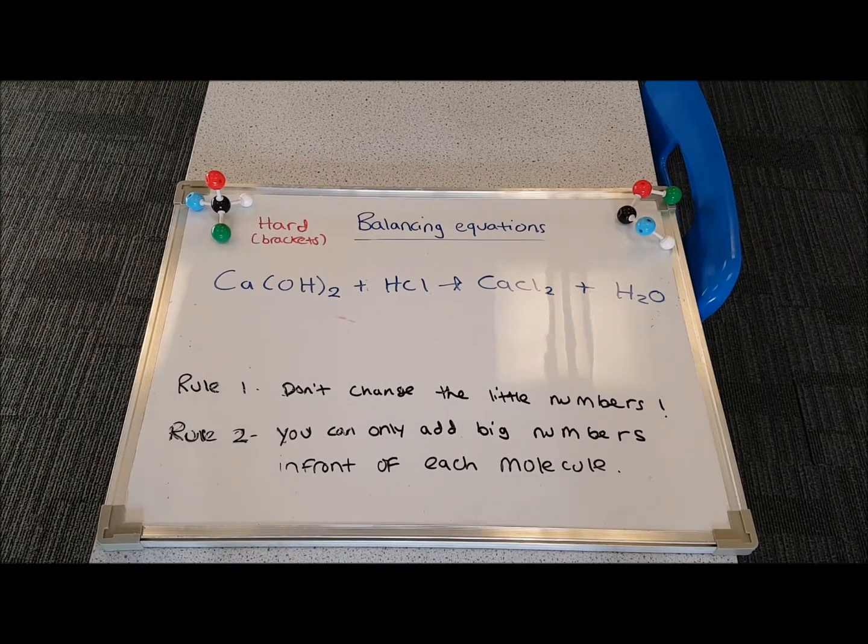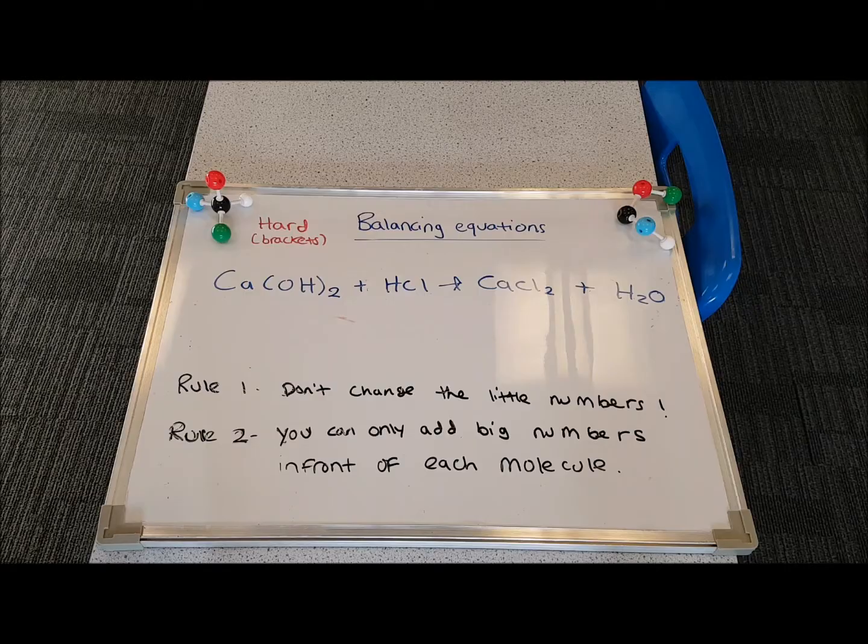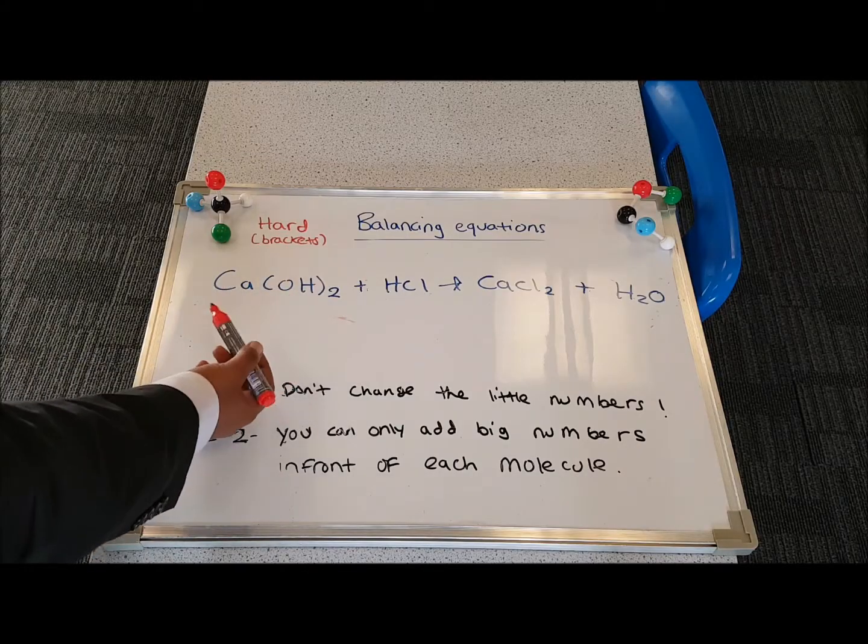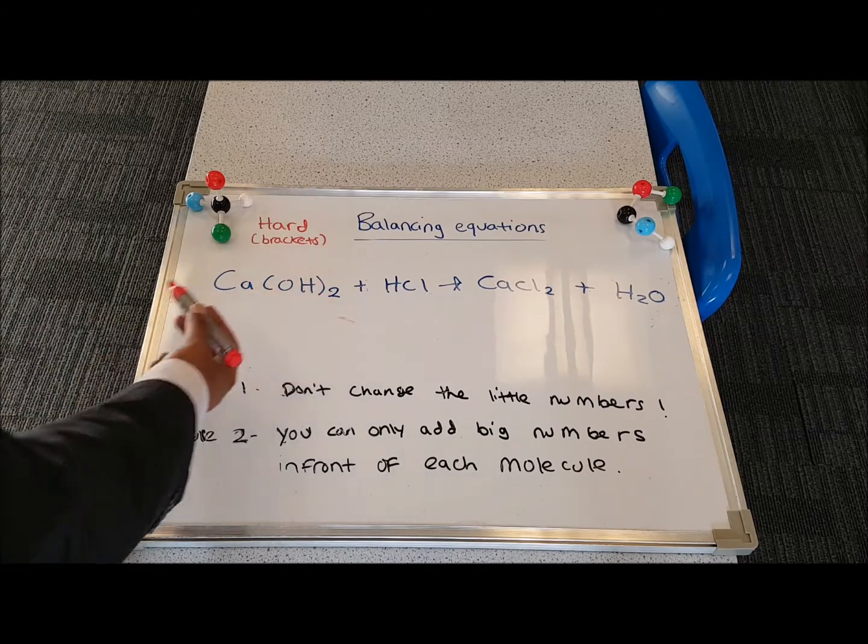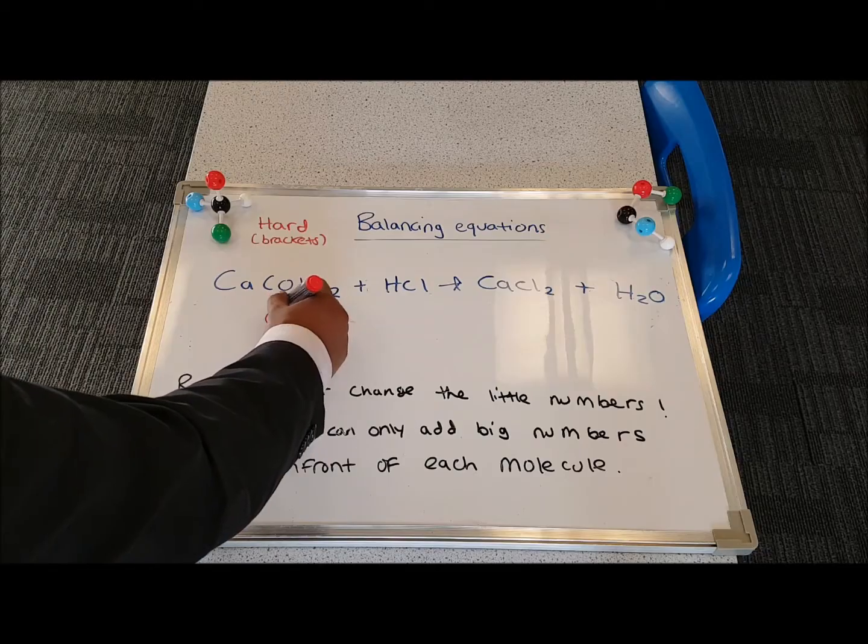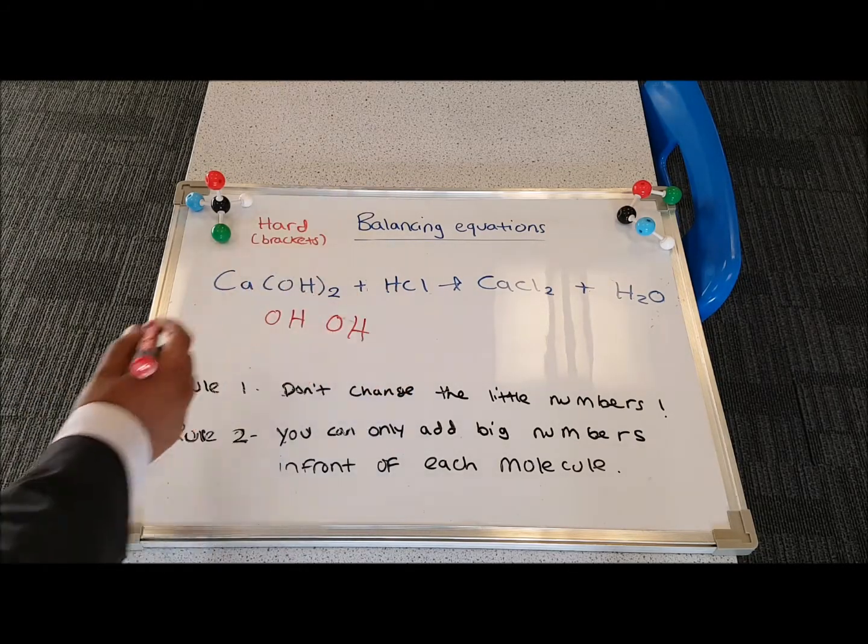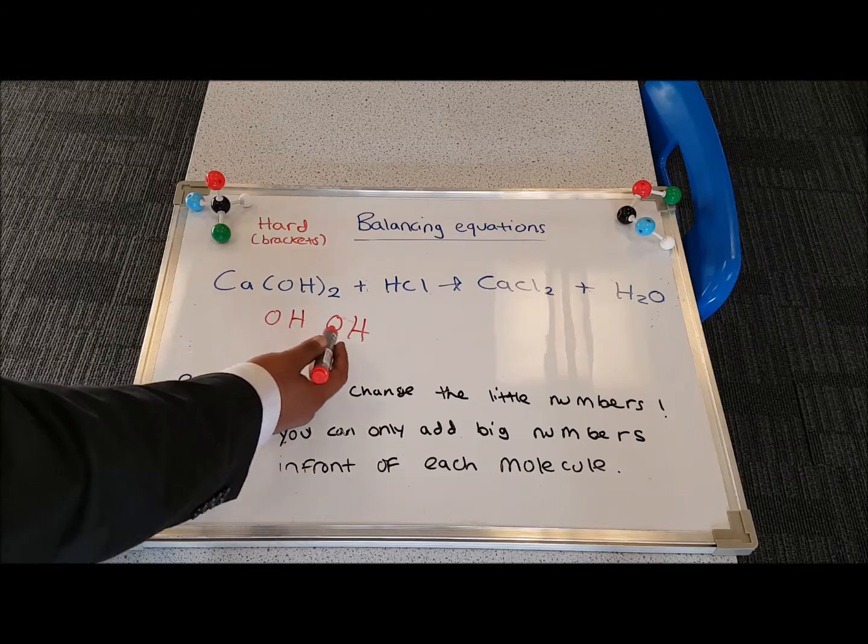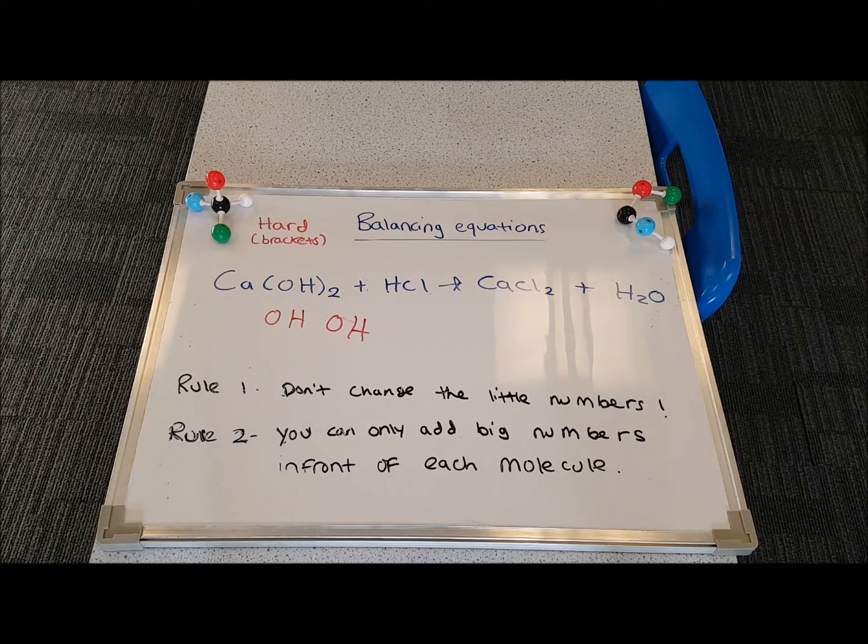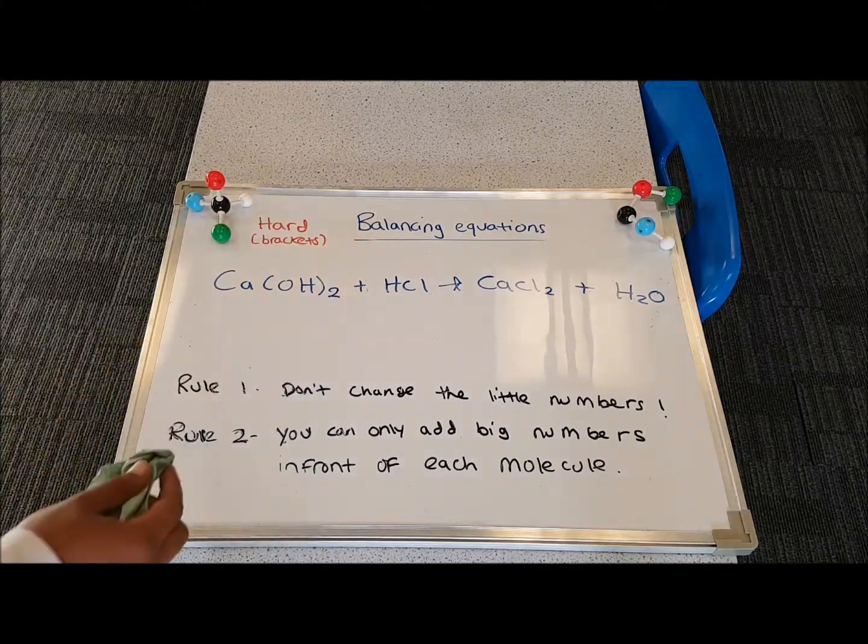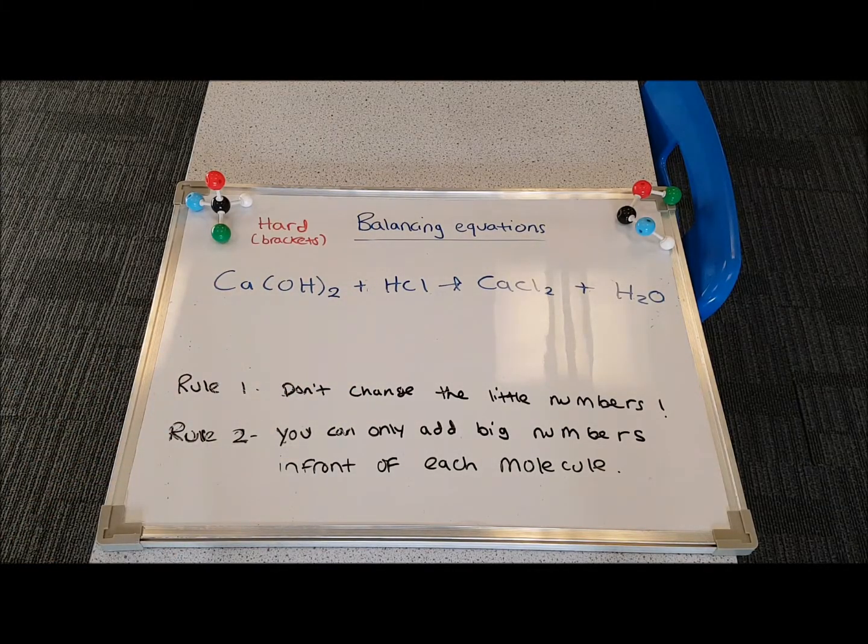This next example is another difficult example. But it's not any more difficult than the previous one, except that this time there are brackets involved. If you have a look at this compound over here, you'll see there's an OH and a little 2. What this simply means is that there are 2 OH groups in this compound. So there's 2 oxygens and 2 hydrogens. Make sure you bear this in mind when you're trying to balance this equation. You can pause the video now and try to balance this.